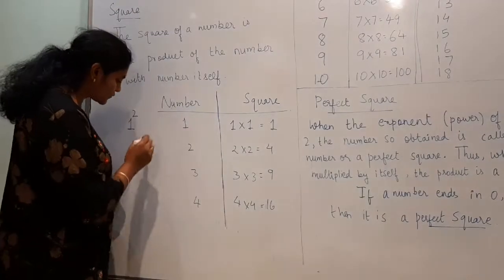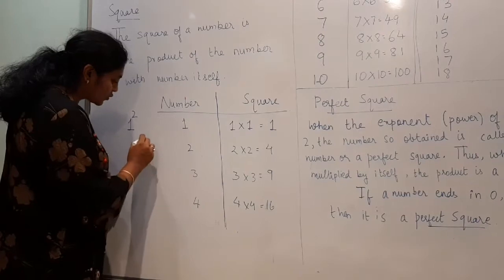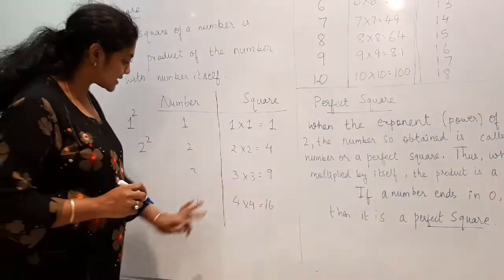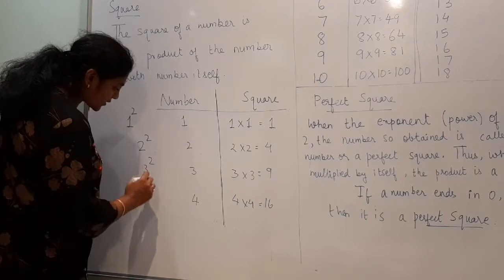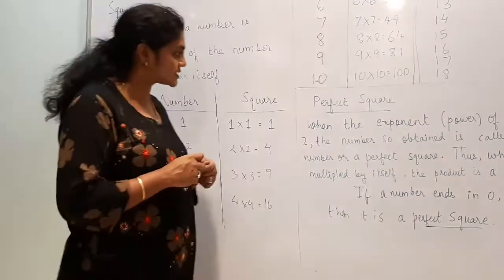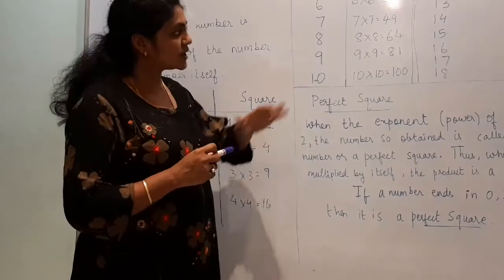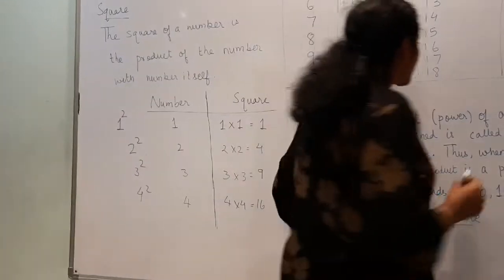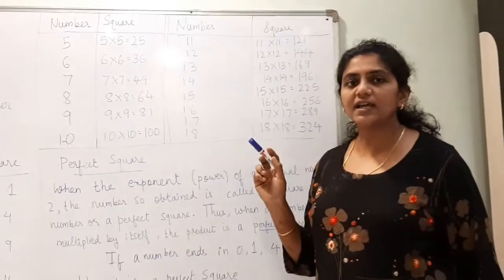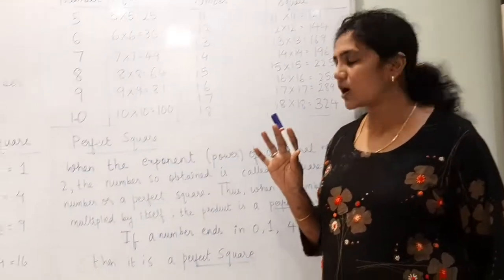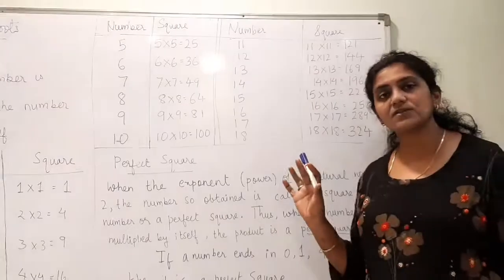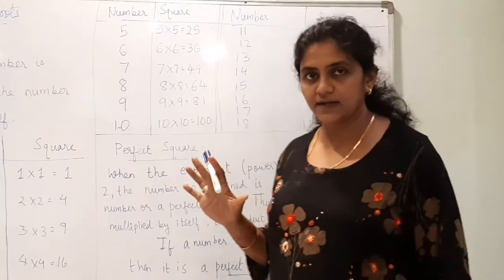So 2 squared is 4, that is 2 × 2. 3 × 3 is 9, so 3 squared is 9. 4 squared means 4 × 4, that is 16. In this way I have shown calculations only up to 18, but generally you must know up to 20 — all the squares of numbers should be memorized.